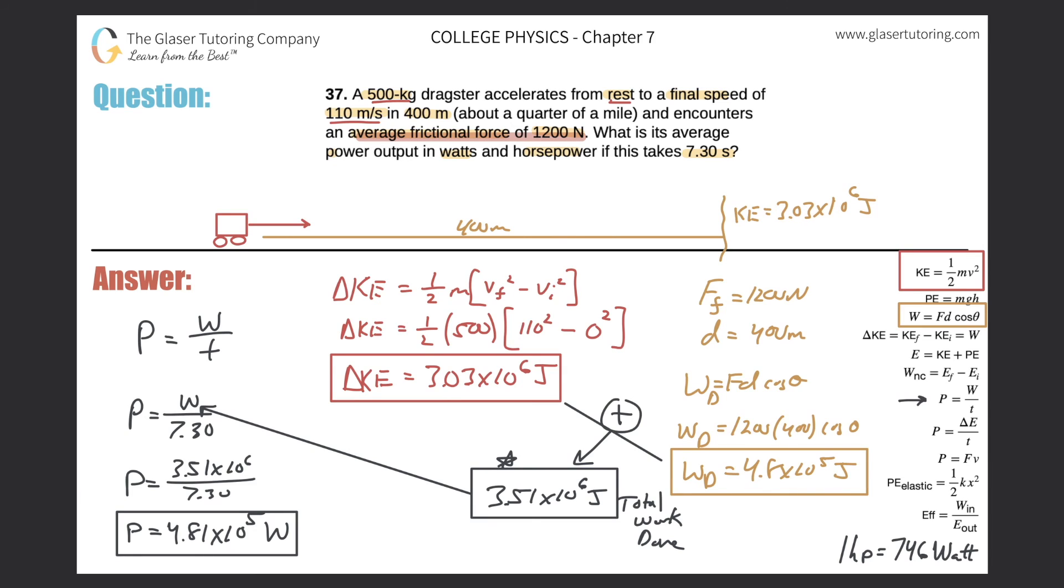And then they want us to find the horsepower. Look at the bottom right-hand side. I have one horsepower is equal to about 746 watts. So I can just do a simple conversion. We've got 4.81 times 10 to the fifth watts, multiplied by horsepower on the top and 746 watts on the bottom. So let's take 4.81 times 10 to the fifth and divide it by 746. And you get 645 horsepower.